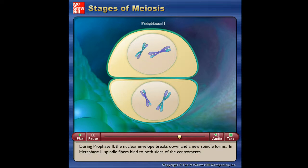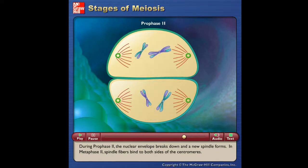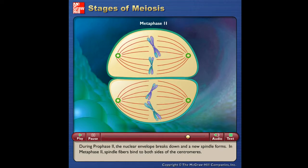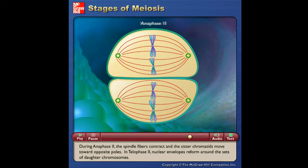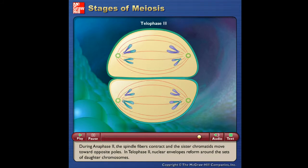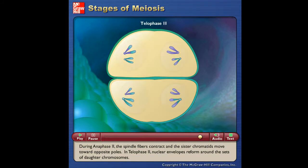In anaphase one, the microtubules shorten and pull chromosomes toward the poles, taking both sister chromatids with them. Each pole ends up with a complete haploid set of chromosomes — one member of each homologous pair. During telophase one, the nuclear membrane reforms around the daughter nuclei; each contains two sister chromatids per chromosome attached at a common centromere, and due to crossing over, these sister chromatids are not identical. In prophase two the nuclear envelope breaks down and a new spindle forms. In metaphase two, spindle fibers bind to both sides of the centromeres. During anaphase two, the spindle fibers contract and sister chromatids move toward opposite poles. In telophase two, nuclear envelopes reform around the sets of daughter chromosomes.